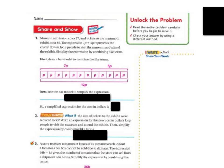So if you wanted to draw a bar model, you can draw 7 of the P's and 5 of the P's. And then when you count them up, 1, 2, 3, 4, 5, 6, 7, 8, 9, 10, 11, 12. So your answer would be 7P plus 5P equals 12P. So the simplified expression, cost in dollars, is going to be 12P. So $12 times the amount of people that are going to be visiting the museum.